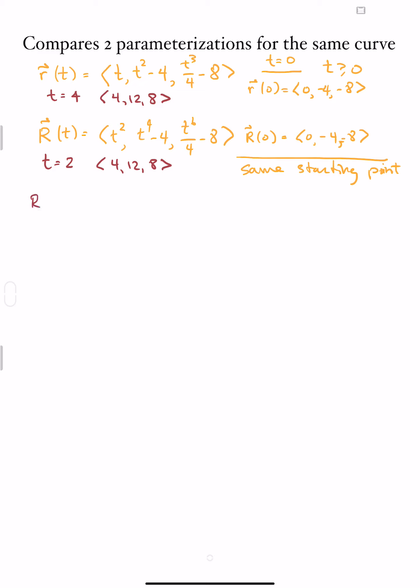Whenever I hear the word rate, I think about velocity, so I want to compute the velocities for each of the two components. If I take r'(t), that's going to be the vector ⟨1, 2t, 3t²/4⟩. When I do that for the capital component, I find that the rate of change is ⟨2t, 4t³, 3t⁵/2⟩.